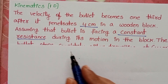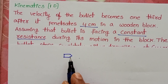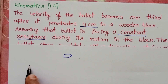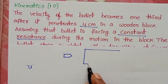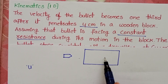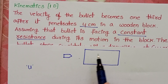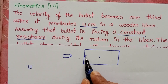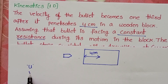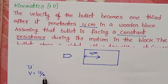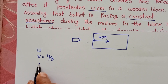In the given question, initially the bullet is travelling with a certain speed. We don't know the initial speed of the bullet, so let us take the initial speed as U. It penetrates through a wooden block, which applies a resistance force on the bullet, causing its velocity to decrease. After travelling 4 cm, the velocity of the bullet becomes one third of its initial velocity, so the final velocity equals U/3.